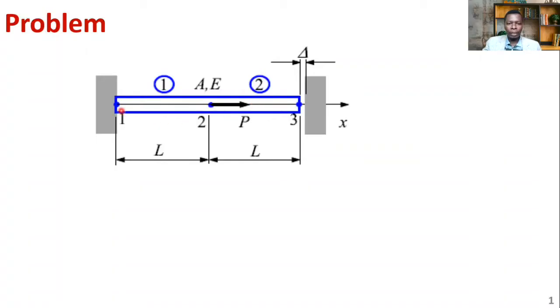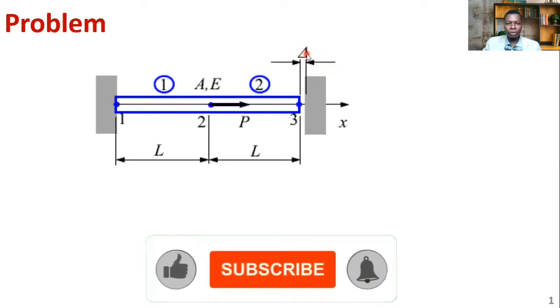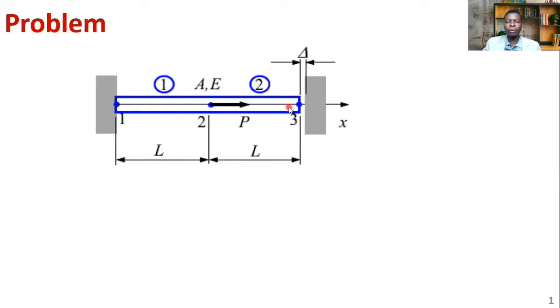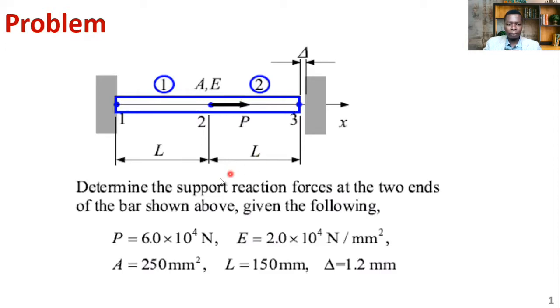You're given this bar and it's fixed on one end. On the other end, we can see a small gap here. And this is the test on this question. How do you handle this gap here so that now we can be able to evaluate, because the question requires us to determine what are the support reactions.